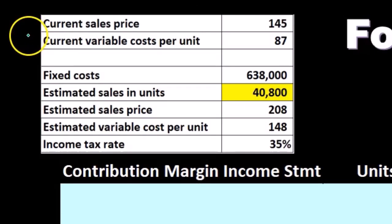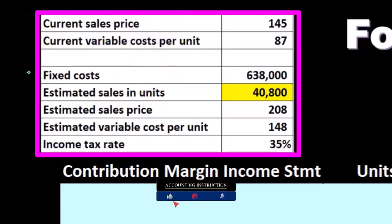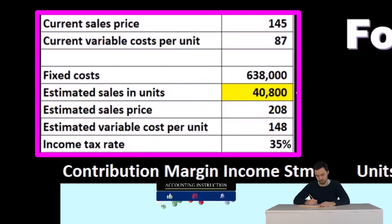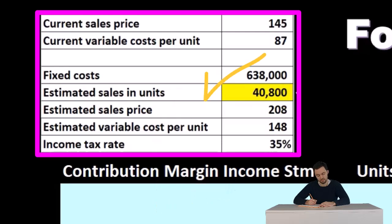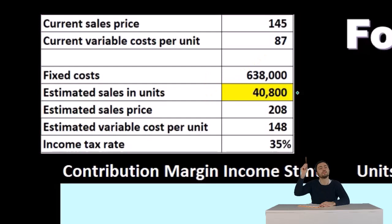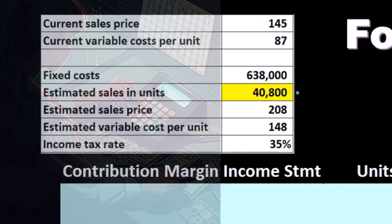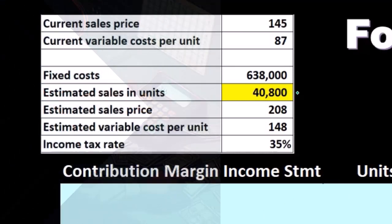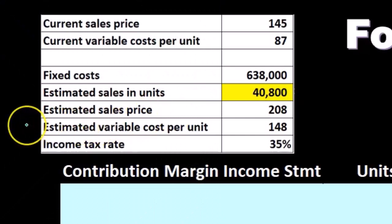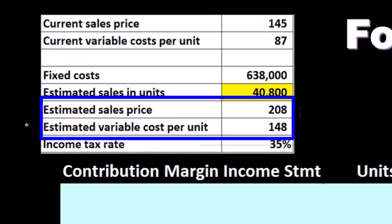We have the current year sales and current year variable costs, and then the fixed costs — which may be very similar from year to year because they're fixed, like rent is typically pretty similar year to year. Then we have the estimated sales in units, which is typically the thing we're going to change. When thinking about the future, we're often going to be changing the sales units number, and we want this set up so that changing that one number causes the whole worksheet to recalculate. We also have the estimated sales price and the estimated variable costs per unit.